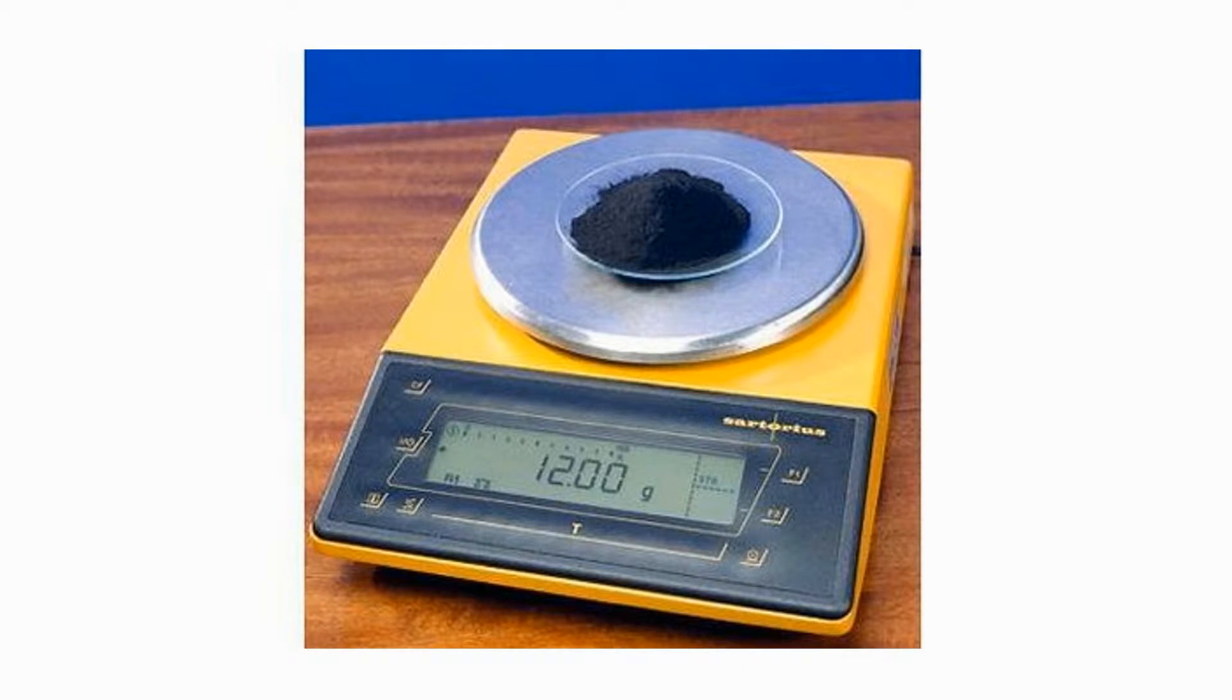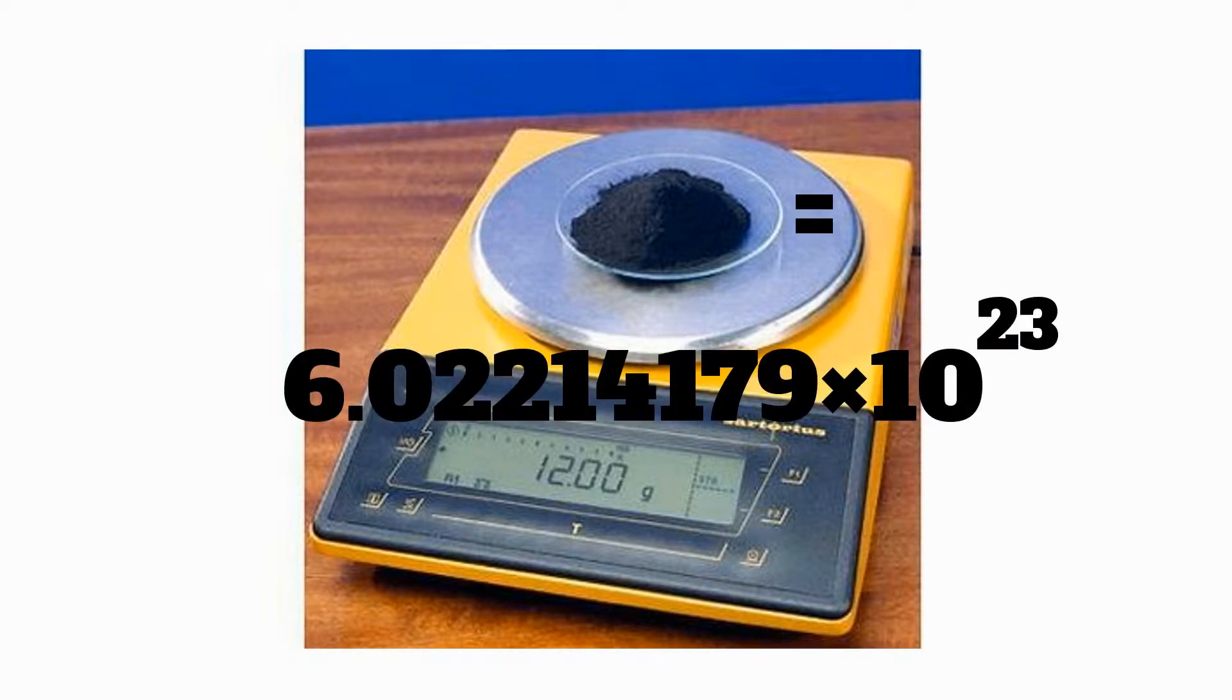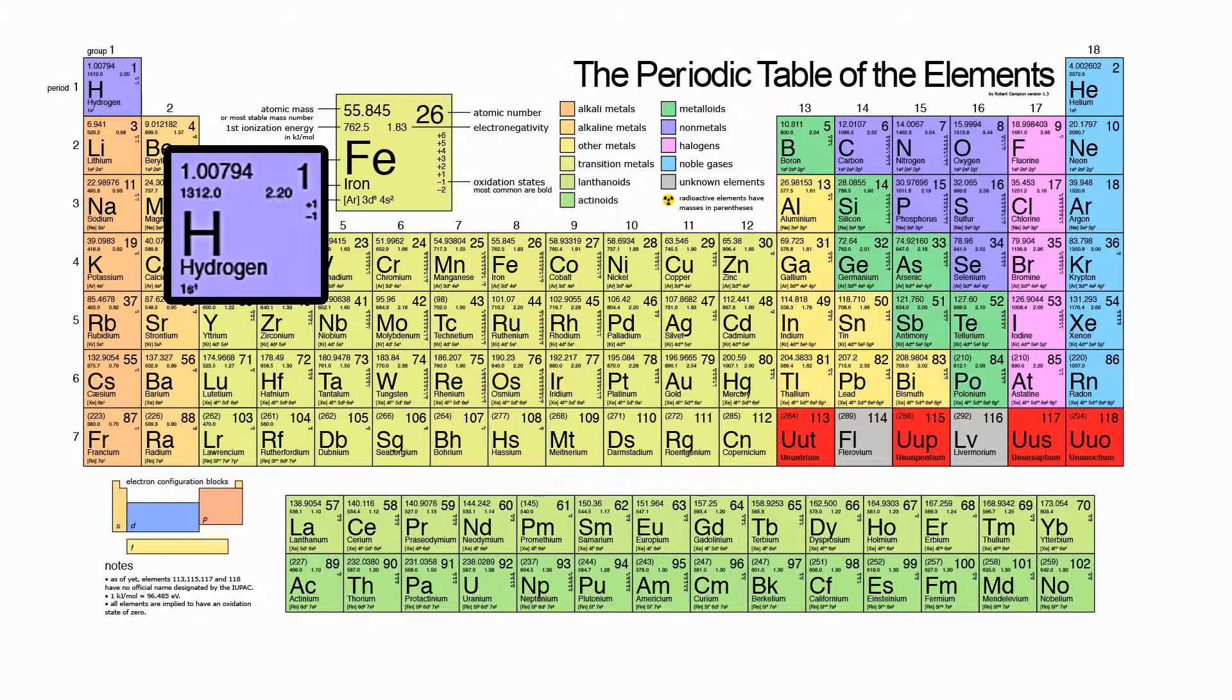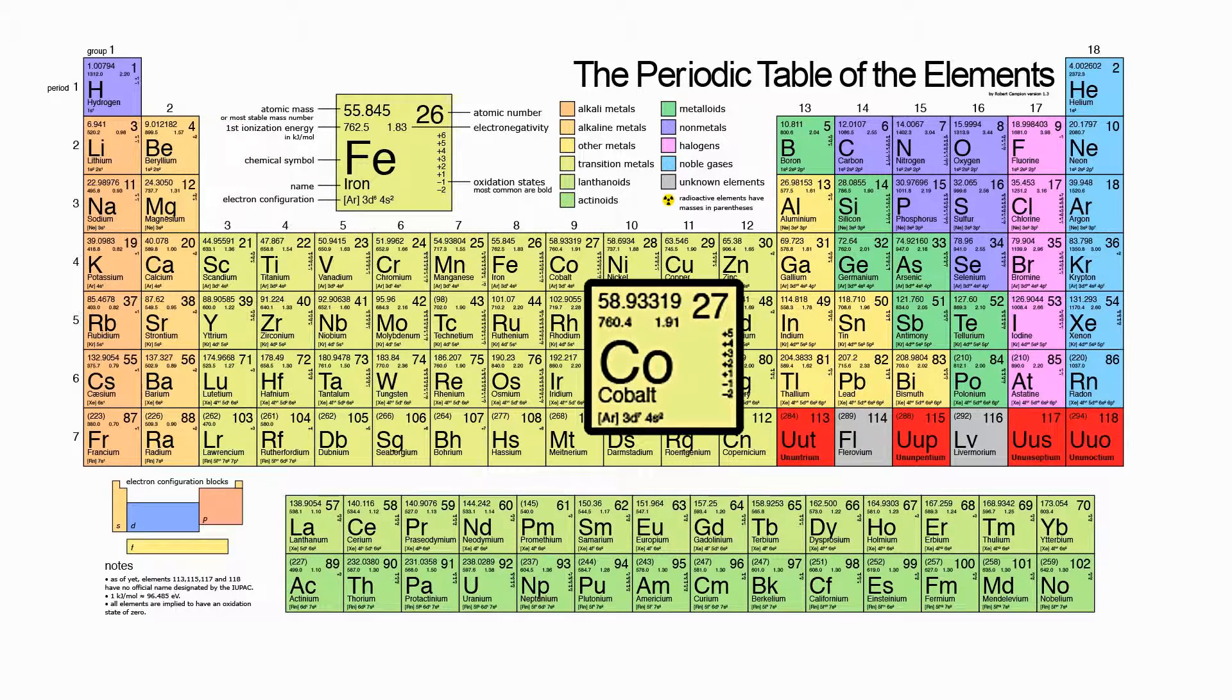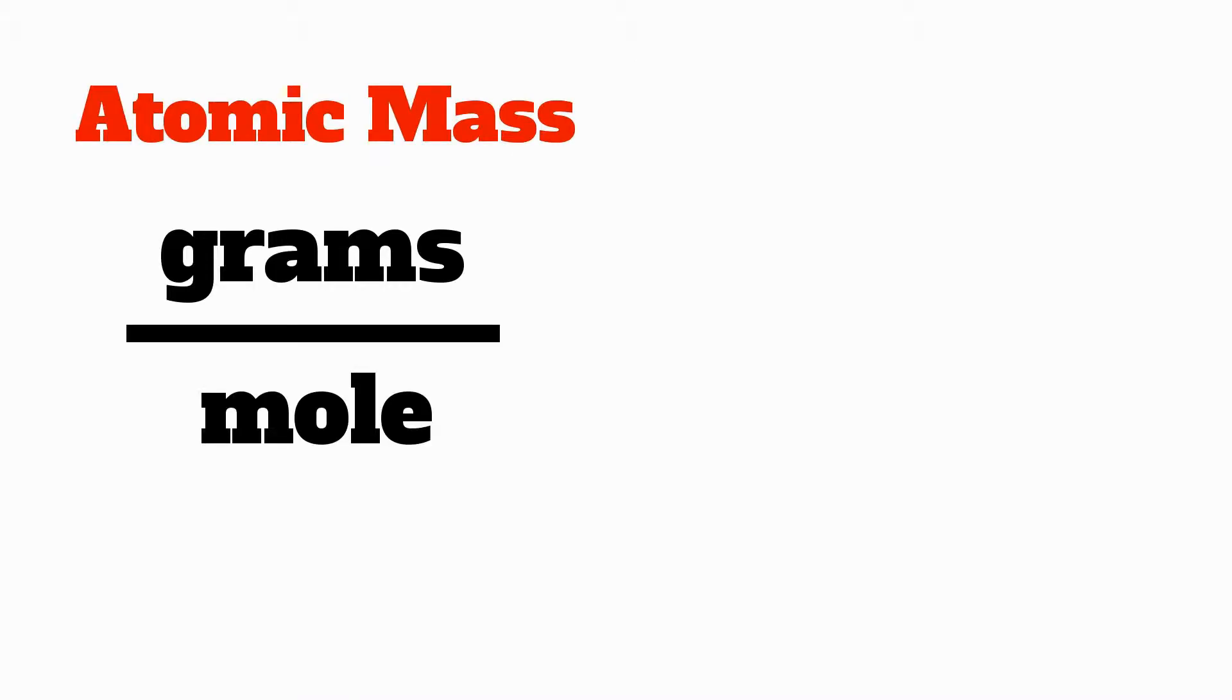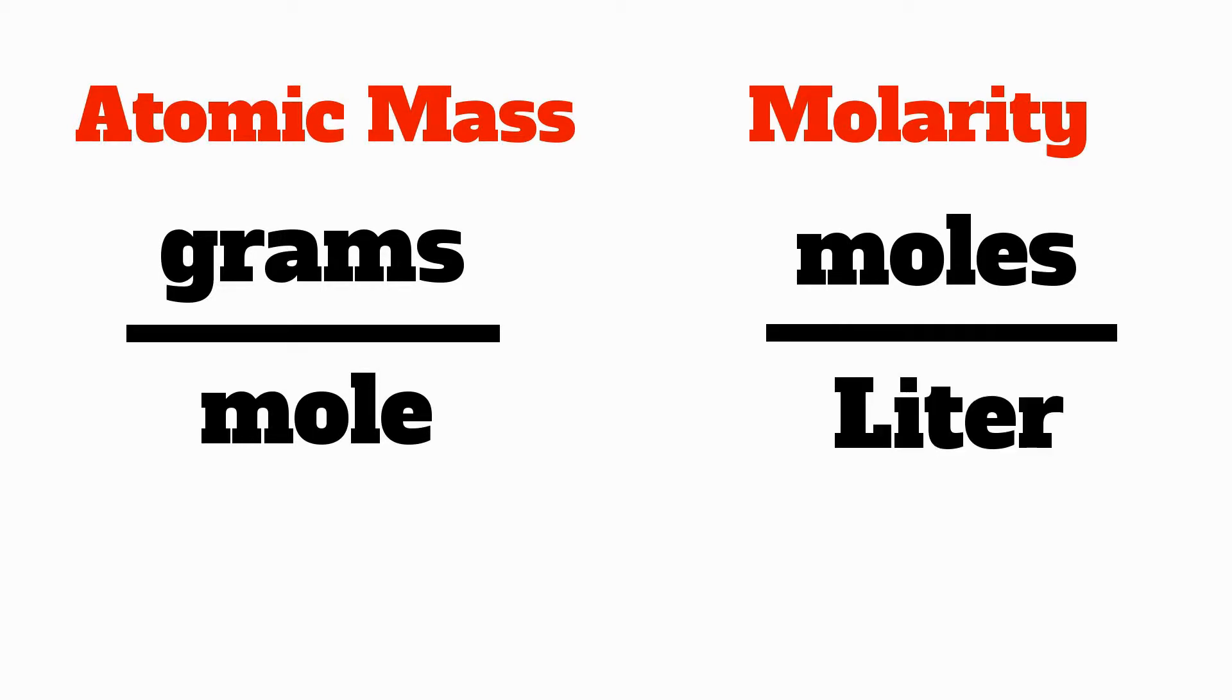That seems like a pretty random number except that it's not when you consider that 12 grams of carbon will contain exactly 6.022 times 10 to the 23 atoms of carbon. This is where you need to whip out your pocket periodic table because every element in the periodic table will have an atomic mass associated with it. All that number tells you is if you had one mole of that stuff, how much would it weigh. If you were holding 6.022 times 10 to the 23 atoms of cobalt, it would weigh exactly 58.933 grams. The units for atomic mass are grams per mole and the units for molarity are moles per liter.